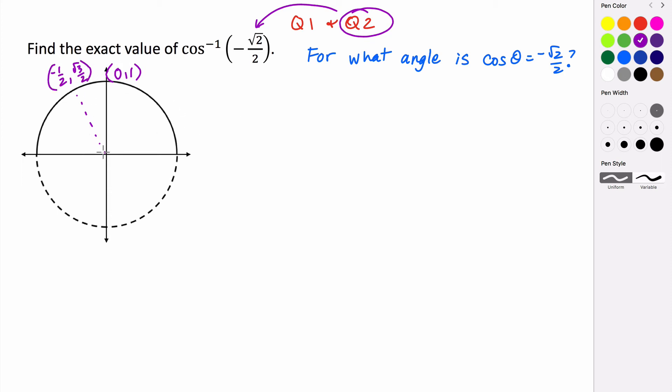At 3 pi over 4, here it's negative rad 2 over 2, rad 2 over 2. So it looks like it's going to be there at 3 pi over 4 because that's where we get the rad 2 over 2s.